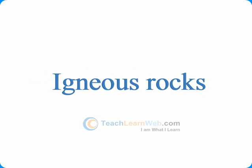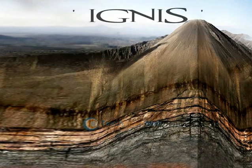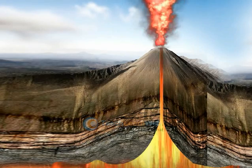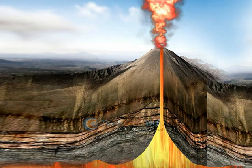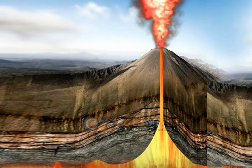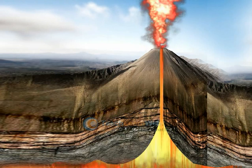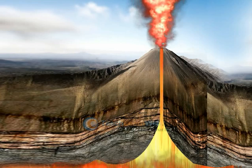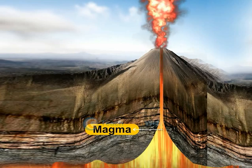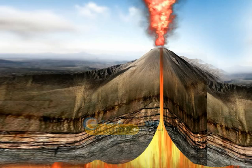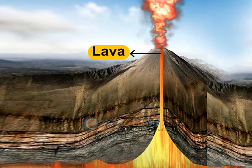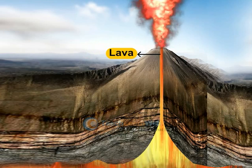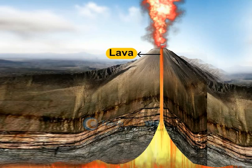Igneous rocks. "Ignes" in Latin means fire. They are formed from the cooling and solidification of hot, molten material pushed from the interior of the earth. This hot material is called magma, and when pushed with pressure onto the surface of the earth it is called lava. This lava on solidification forms one kind of igneous rock, the basalt.